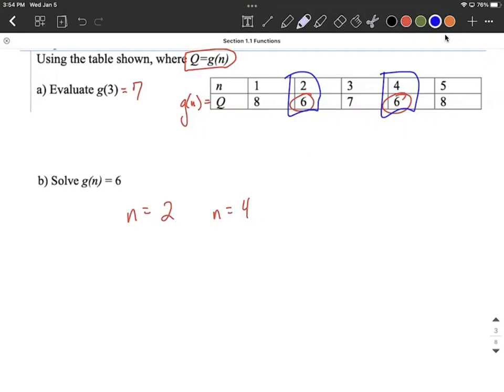So I hope that helps out. This also means that g of 2 equals 6 and g of 4 equals 6. All right. Good luck on these.